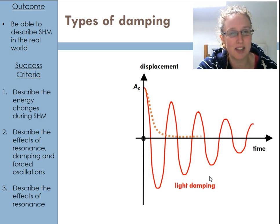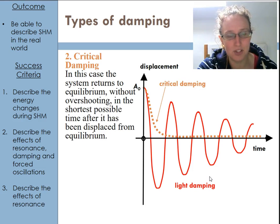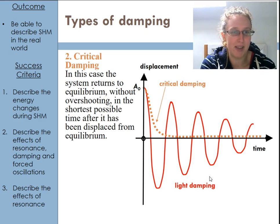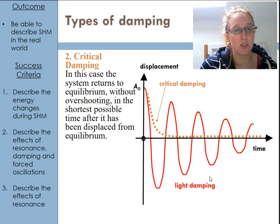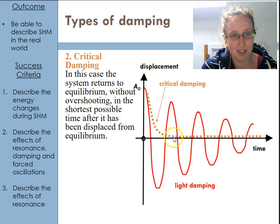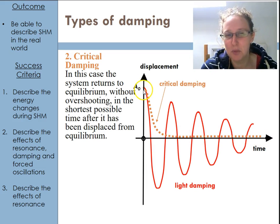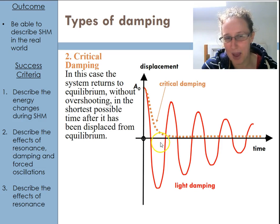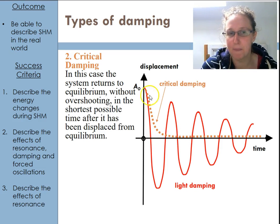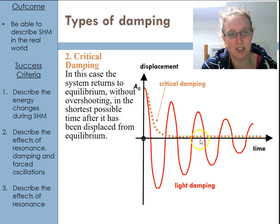Our next type is called critical damping, which is basically as extreme as you get. In this case, we go straight back to the equilibrium position. Sometimes with critical damping it might go past the equilibrium position and then come straight back, but really it's when it just returns to the equilibrium position as fast as possible.